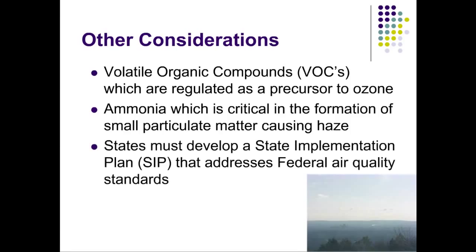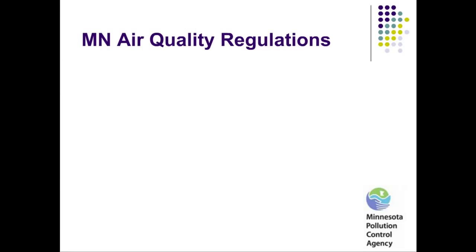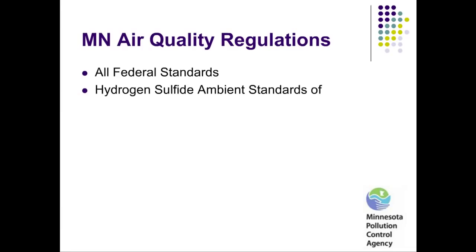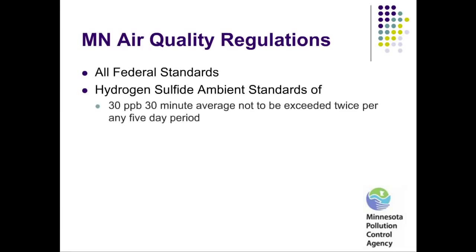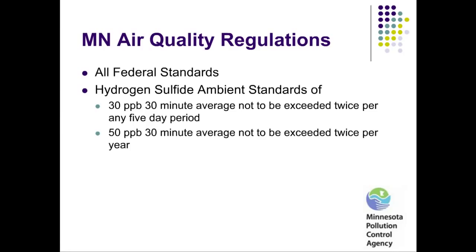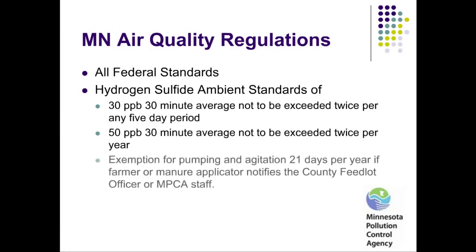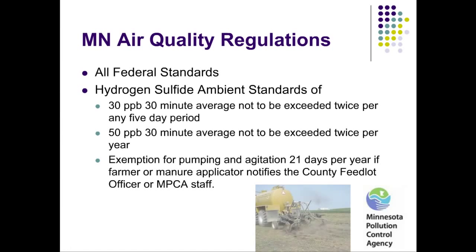Regardless, all states are responsible for developing state implementation plans to meet federal air quality standards. In addition to federal standards, Minnesota has ambient air quality standards for hydrogen sulfide at property lines — concentration limits of no more than 30 parts per billion averaged over a half hour more than twice in any five-day period, or more than 50 parts per billion averaged over the same time period twice a year. Farmers are allowed up to 21 days a year to exceed these limits when pumping and agitating manure during land application, but only if they first notify the county feedlot officer or the MPCA.